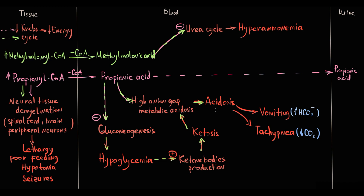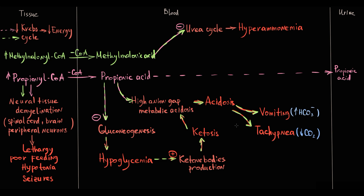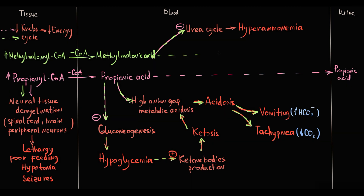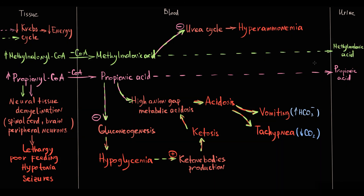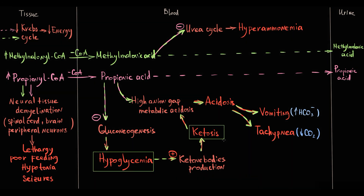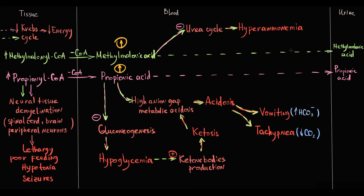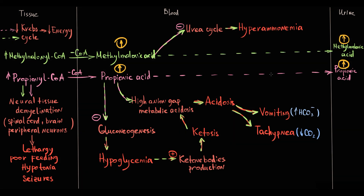Acidosis induces two compensatory reactions: vomiting and tachypnea. Because methylmalonic and propionic acids are excreted into the urine, this causes methylmalonic and propionic aciduria. Methylmalonic acidemia has exactly the same clinical features as propionic acidemia: hypoglycemia, hyperketosis, high anion-gap metabolic acidosis, and hyperammonemia. The only major difference is the presence of both methylmalonic acid and propionic acid in the blood and urine.